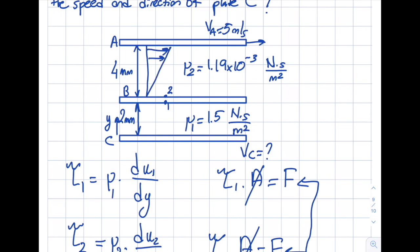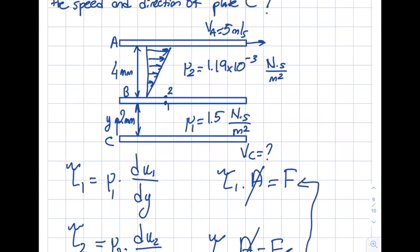So this will help me. So du2 dy will be 5 minus 0 divided by 4 millimeters. That's what it will be. And for the second fluid that I have here. So if I want to drop this, this will be like this on the other side.